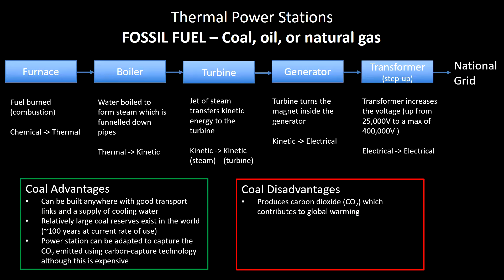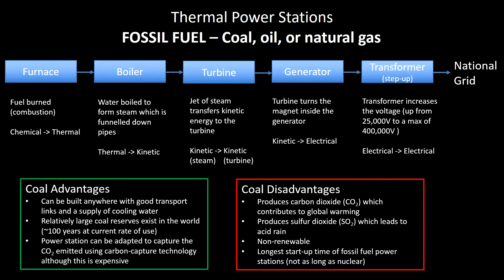Disadvantages of coal: it produces carbon dioxide which contributes to global warming, and it produces sulfur dioxide which leads to acid rain. Try to be specific about which pollutants you're talking about — just saying 'pollution' is too general and will often not get you any credit. Obviously coal is non-renewable due to its limited supply, and out of all the fossil fuel power stations, it takes the longest to start up. Not surprising because coal is a solid and takes longer to get heated and burning properly, though the startup time is not as long as nuclear.